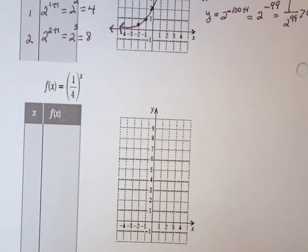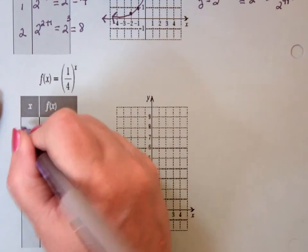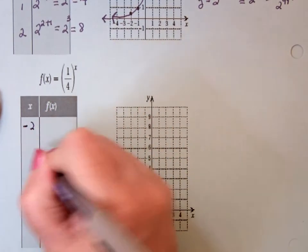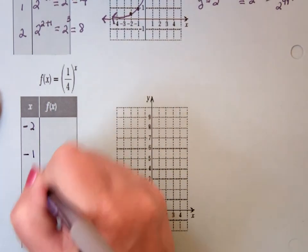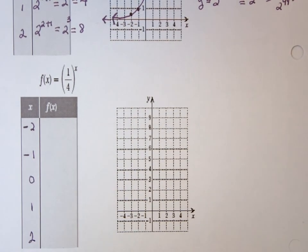So suppose what I have is 1 fourth to the x. Well, again, the domain's all real numbers, so negative 2, leave some space, negative 1, 0, 1, and 2.